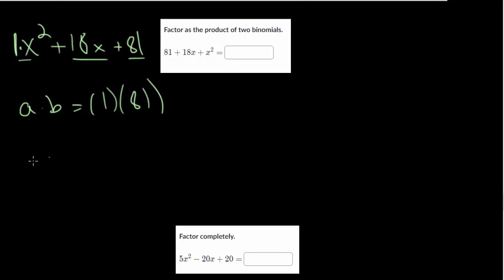So in this case, 1 times 81. And we know that they add up to this middle term here, this 18x. Or the coefficient on x, so just 18.